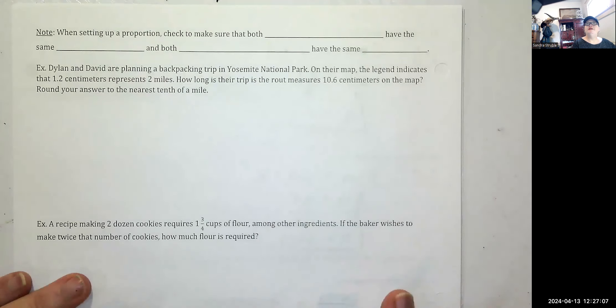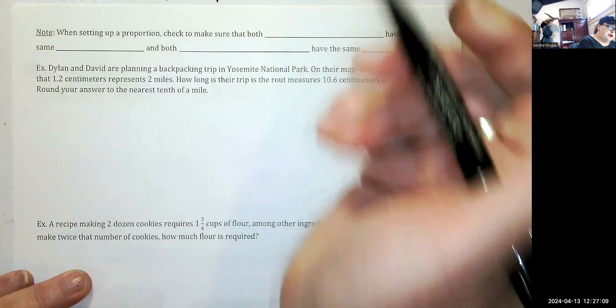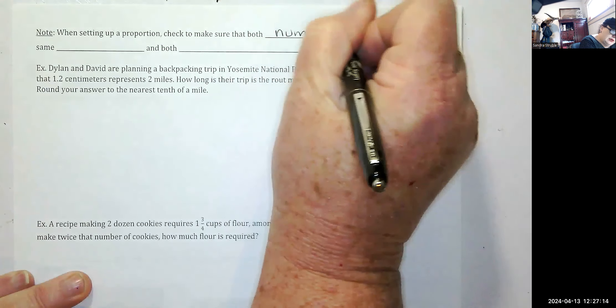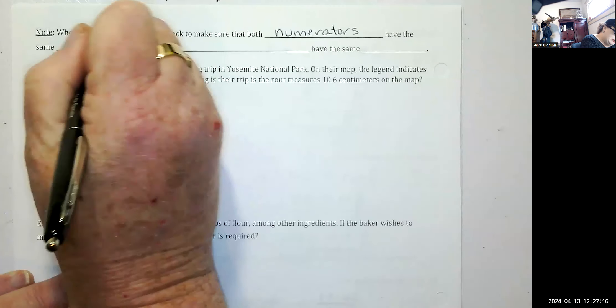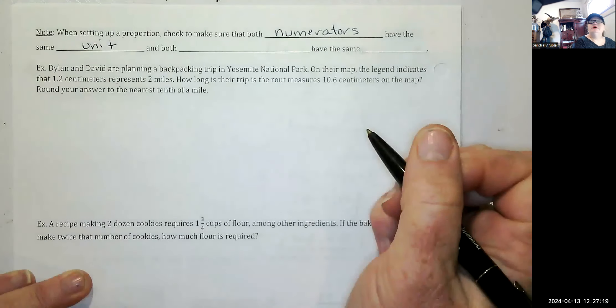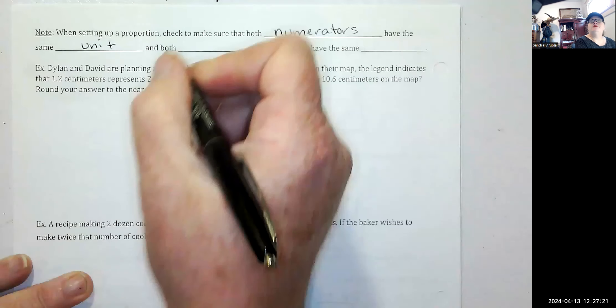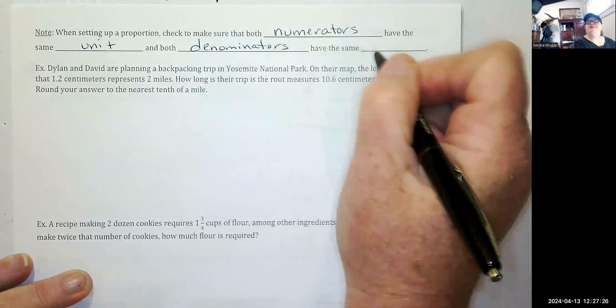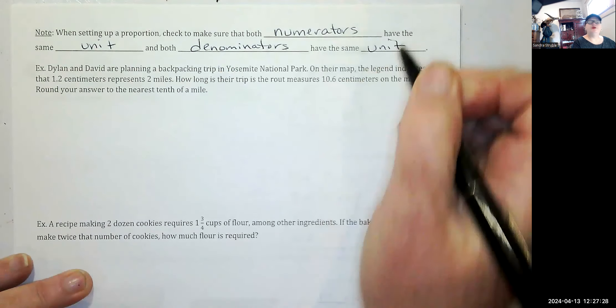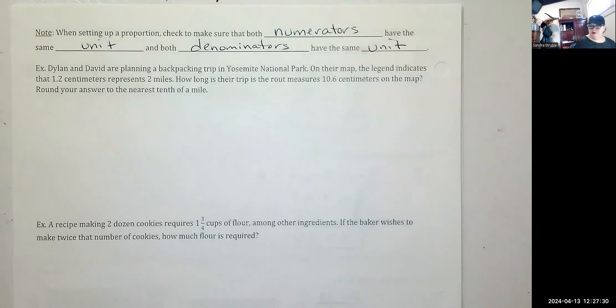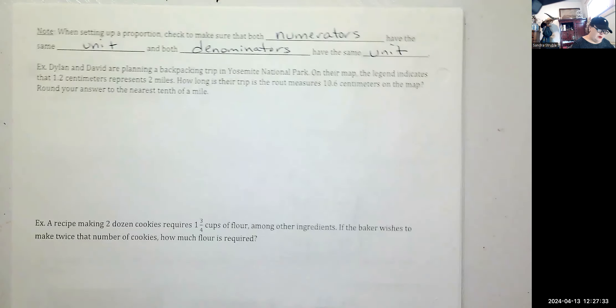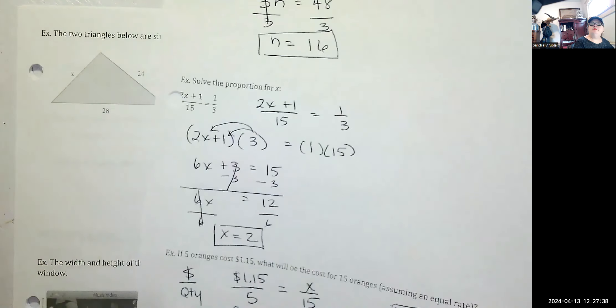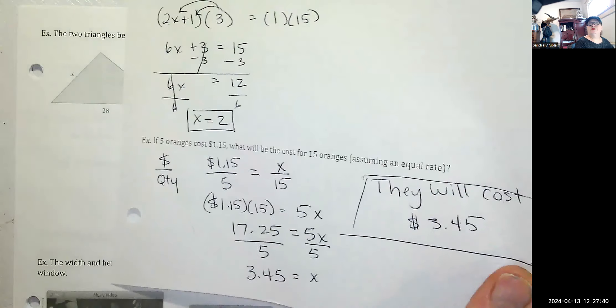Note, when setting up a proportion, check to make sure that both your numerators have the same unit. Like in that last one, they both had dollars. And both denominators have the same unit. Quantity was our unit, or the oranges was our quantity.